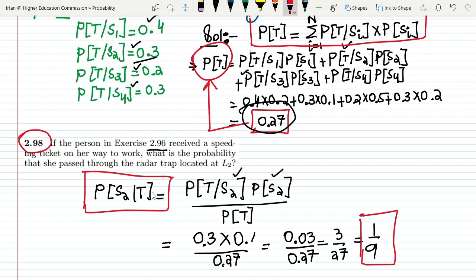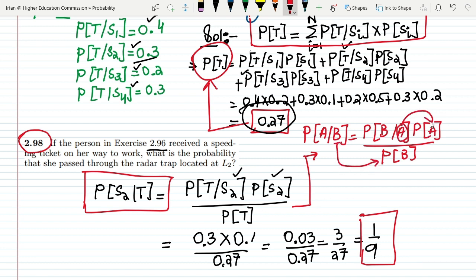That is it for today in which we have seen another application of Bayes theorem. According to Bayes theorem, the probability of A given B is always the probability of B given A multiplied with the probability of A, divided over the probability of B, which is here, and this one is here because it is here.